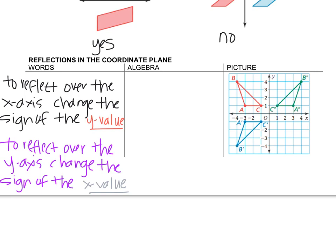So algebra language, to reflect over the x-axis, we would have point (x, y). And if we're only changing the sign of the y value, it lands at (x, -y). Question comes up, what if y is already negative? Well, you change the sign, so that means that it turns positive.